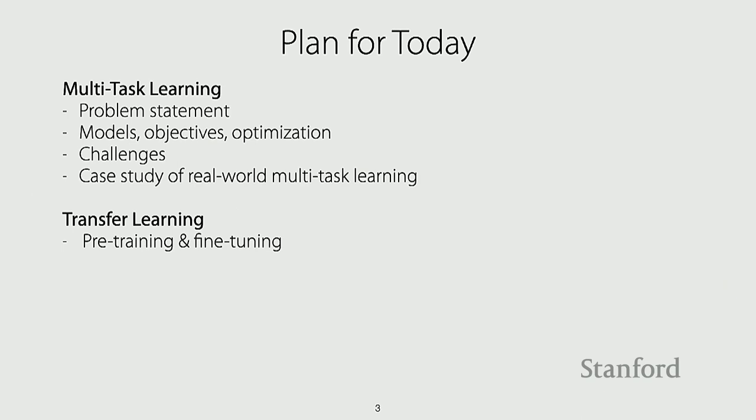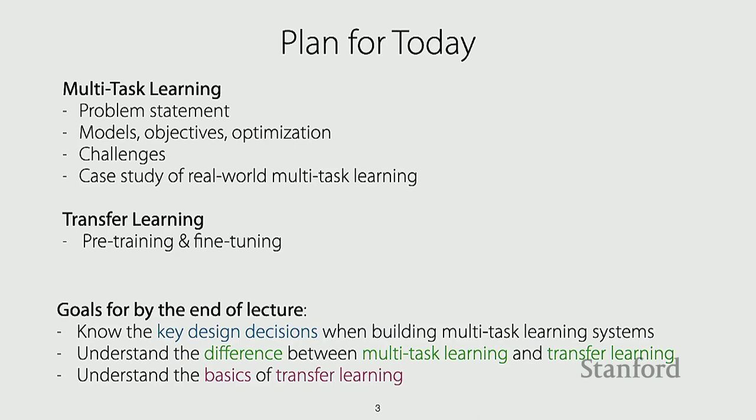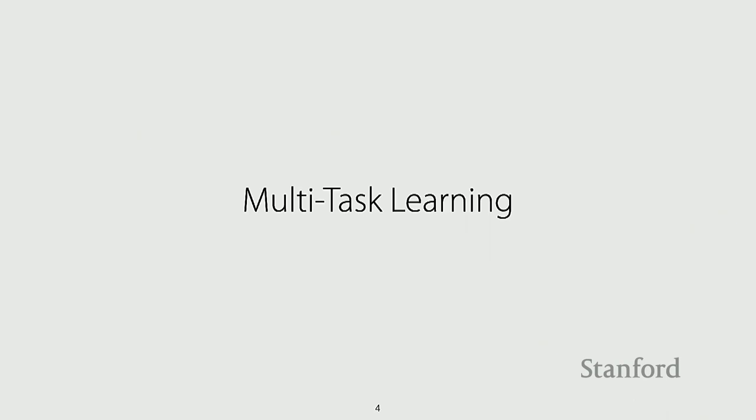The plan for today is to talk primarily about multitask learning — covering the problem statement, the model, the objective, the optimization process, and different challenges that arise. We'll also go through a case study of a real-world example of multitask learning. If we have time, we'll cover transfer learning as well, though we'll likely just cover it in a future lecture. The goals by the end of this lecture are to understand the key design choices when designing multitask learning systems, and to understand the differences between multitask learning and transfer learning.